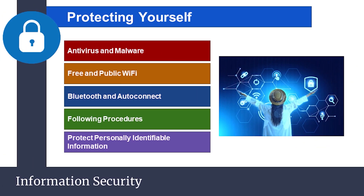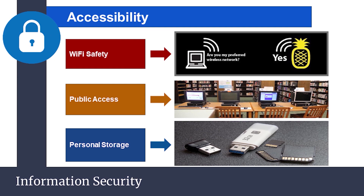With so many ways to be compromised, it's important that you understand some ways to protect yourself, your organization, and your constituents. Things like viruses and malware, free and public Wi-Fi, Bluetooth, and auto-connect are all vectors of compromise. Following organizational procedures may at times seem tedious or unnecessary, but often helps avoid dangerous situations. Above all, make sure you are aware of the personally identifiable information you are in possession of — whether it's your information or someone else's, like a student. All of this type of information should be handled with the highest sensitivity. Even seemingly harmless information like addresses can be a valuable resource for a threat actor. Be mindful of how you handle, transfer, and secure this information.